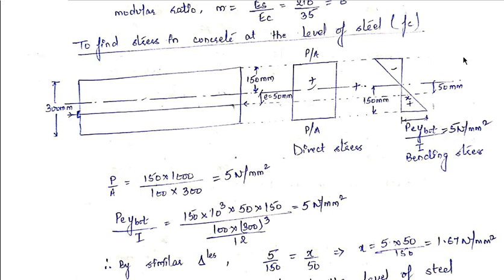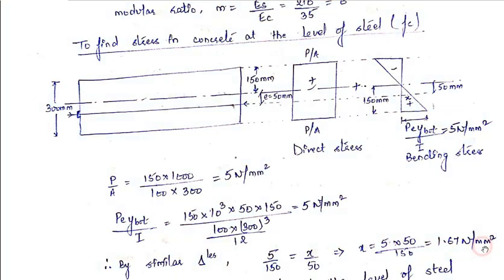Using similar triangles from the bending stress diagram, there are two triangles. For the larger triangle, the perpendicular is 5 N/mm² and the base is 150 mm. For the smaller triangle, the perpendicular is X (stress at steel level) and the base is 50 mm. So: 5/150 = X/50, which gives X = 1.67 N/mm².